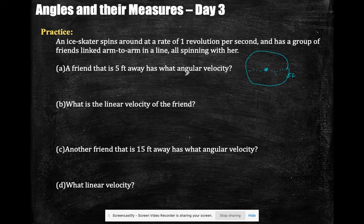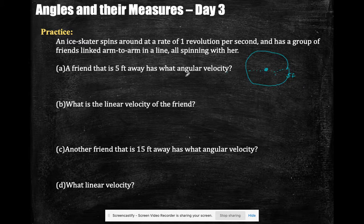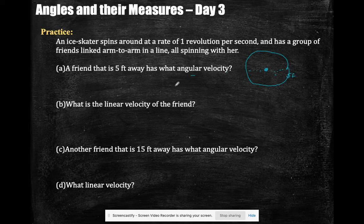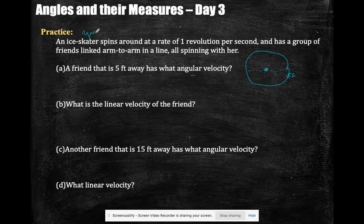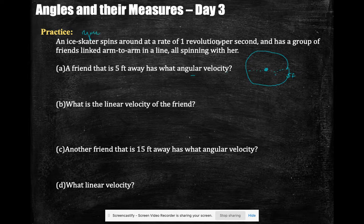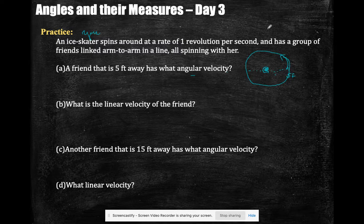What is their angular velocity? Trick question. Doesn't matter how far they are away for the angular velocity. They already told me what it is. If you spin at 1 revolution per second, this is the concentric circles case, because you're spinning here and your friend is spinning here.